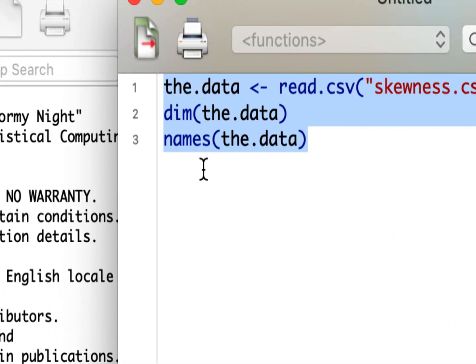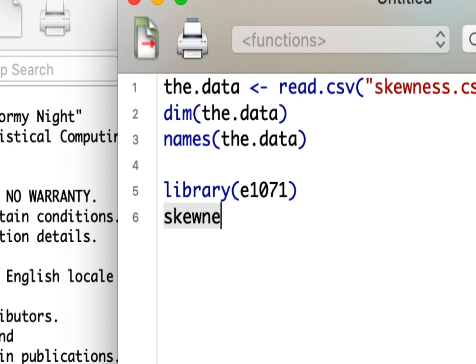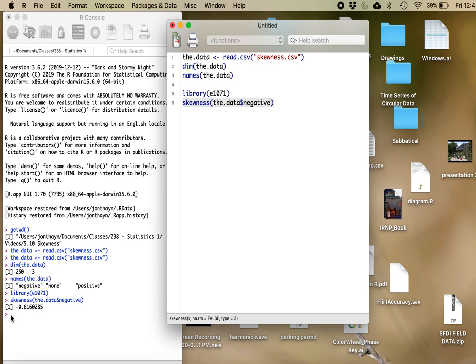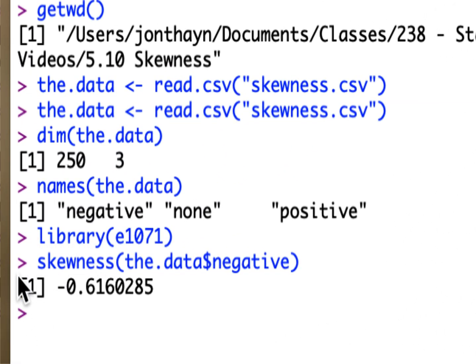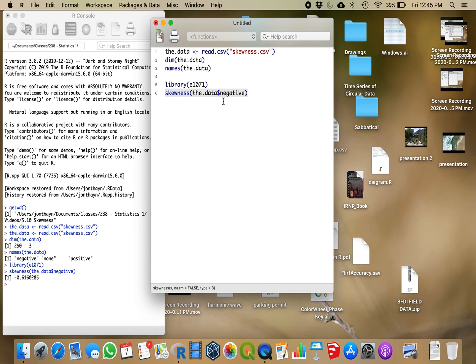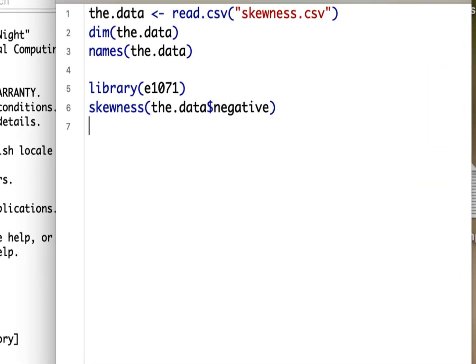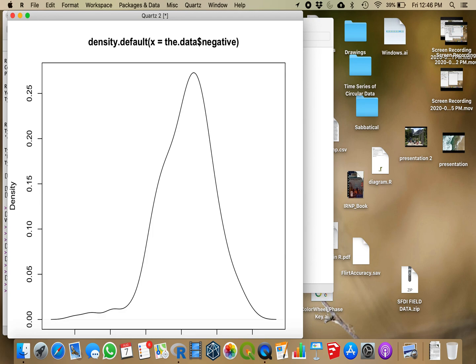So the easiest way to calculate this, to calculate skewness, we can create our own function. But inside the E1071 package, there is a function called skewness. And let's say that I was trying to calculate the skewness of the negative variable. So I'll send those two over. So here I've opened up the library, and here I've called the function. And in that case, I have a negative 0.616 for my skewness. And we can confirm that we have negative skew there by plotting that out. And you can see we have a negative tail.